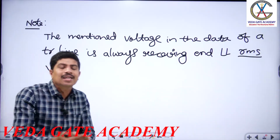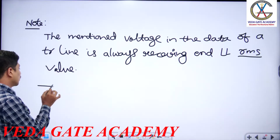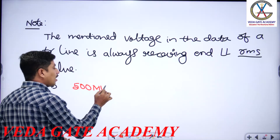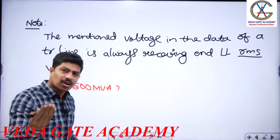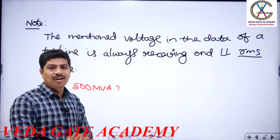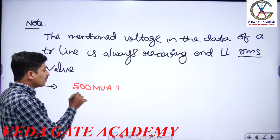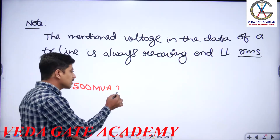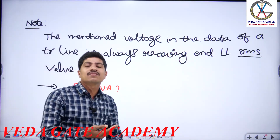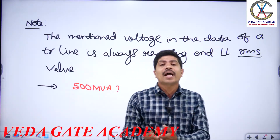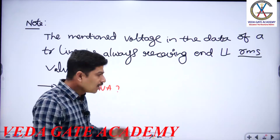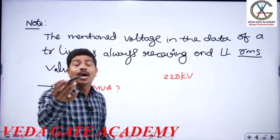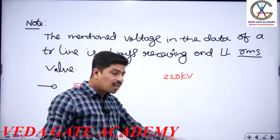500 MVA: this is three-phase power belonging to all three phases. If it is a balanced system, per-phase power will be 500/3 MVA. So the given transmission line is always assumed to be three-phase. Understanding the given data properly is critical — if you take 220 kV as the sending end voltage, the entire answer will be wrong, and the wrong answer will likely appear among the given options, resulting in negative marking.